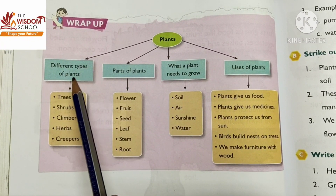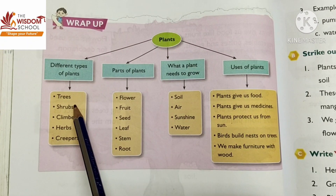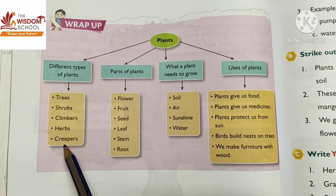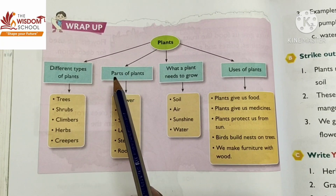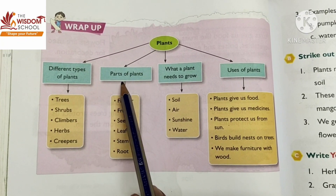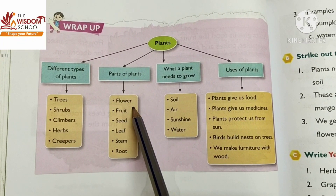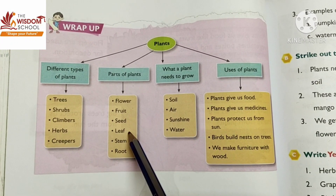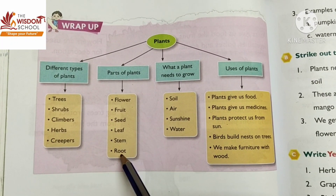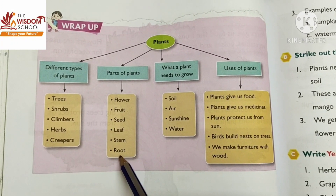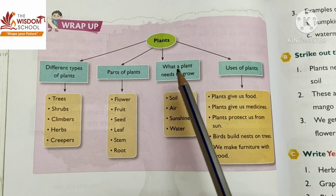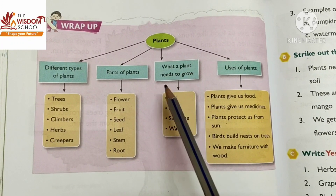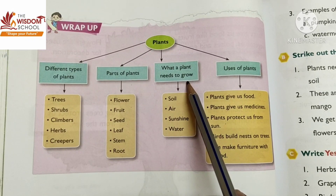Different types of plants: trees, shrubs, climbers, herbs, and creepers. We have also read parts of plants — that are flower, fruit, seed, leaf, stem, and root. What does a plant need to grow? Plant ko kin chizo ki requirement hoti hai for growth?